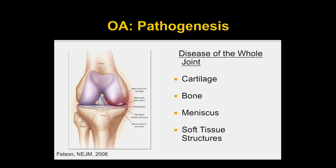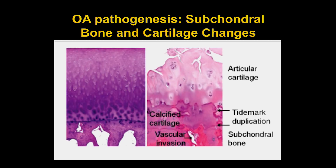It's well understood that OA and its pathogenesis really involves all components of the joint. It's not just about losing cartilage. There are biomechanical changes and adaptations within all structures in the joint, including bone, the meniscus, and soft tissue structures — which is where things like physical therapy come into play to try to compensate for compromised biomechanical function.